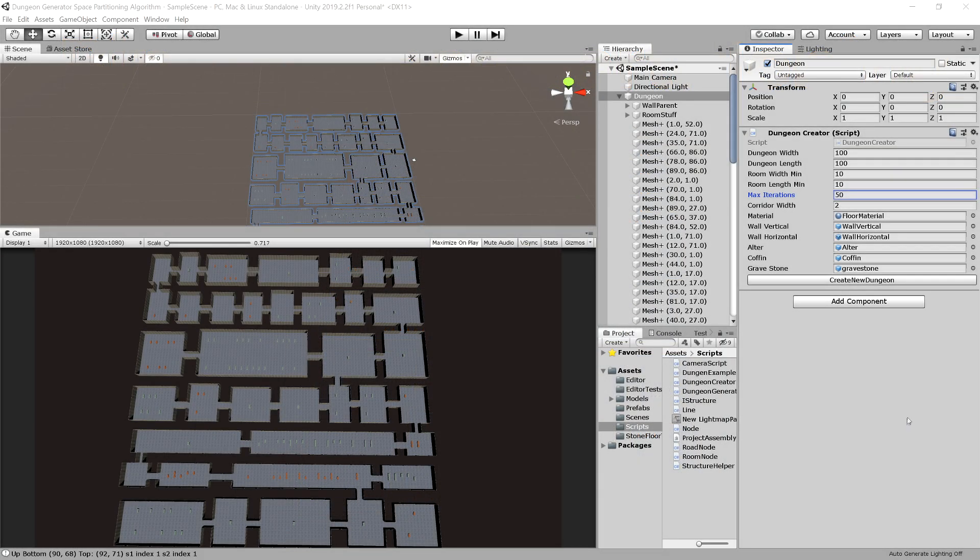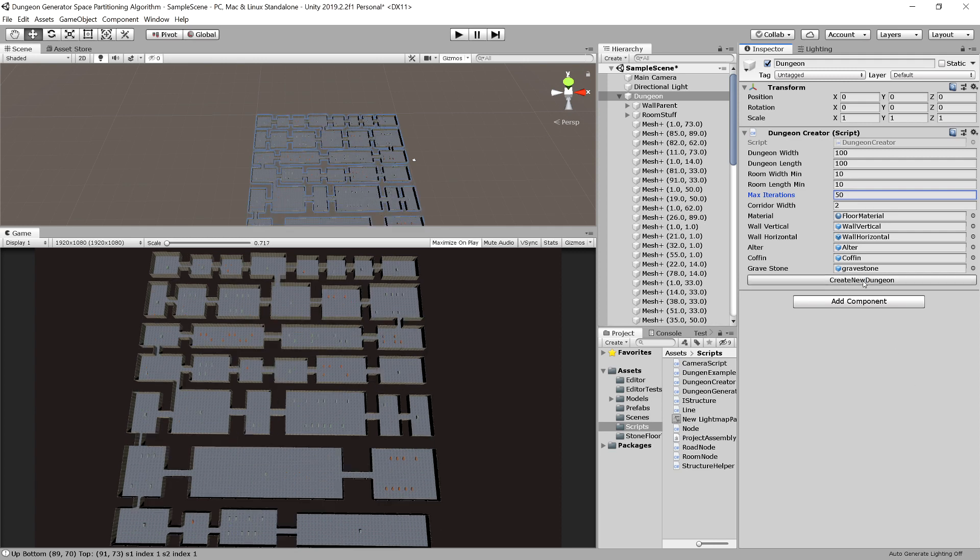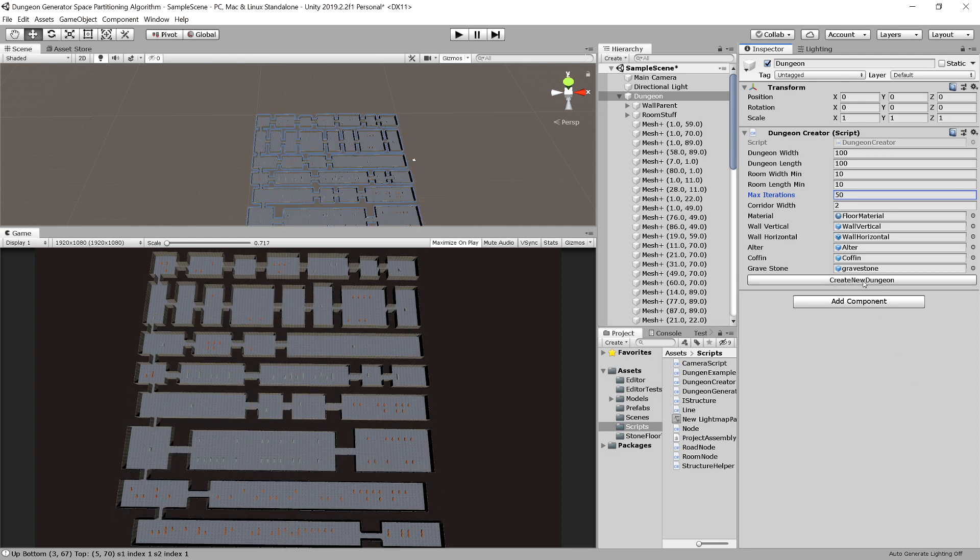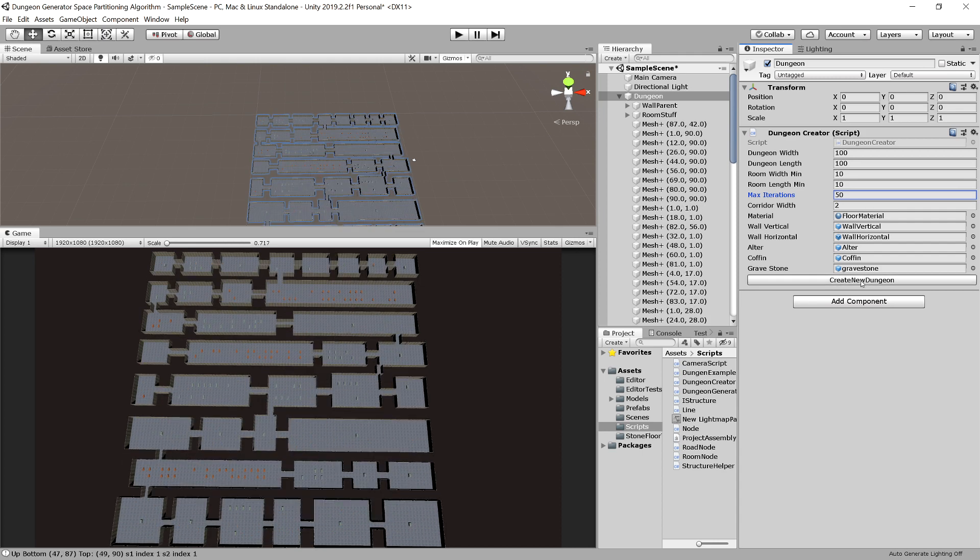This is a simple room generation algorithm. It generates different rooms and each time it splits the space into smaller spaces, creates the mesh in places of the rooms that we have generated.